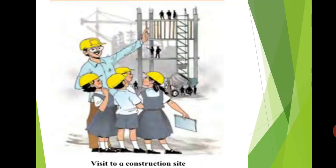Dear students, visit a place where construction work is going on. List the materials that you see there and obtain information about the pollution in that area. A list of materials is given in your textbook on page 54. You can find the original source from where each material is obtained and fill in the boxes given on page 54. Then you can compare your own list with your friends' list and note down the original sources from which construction material is obtained in the chart.